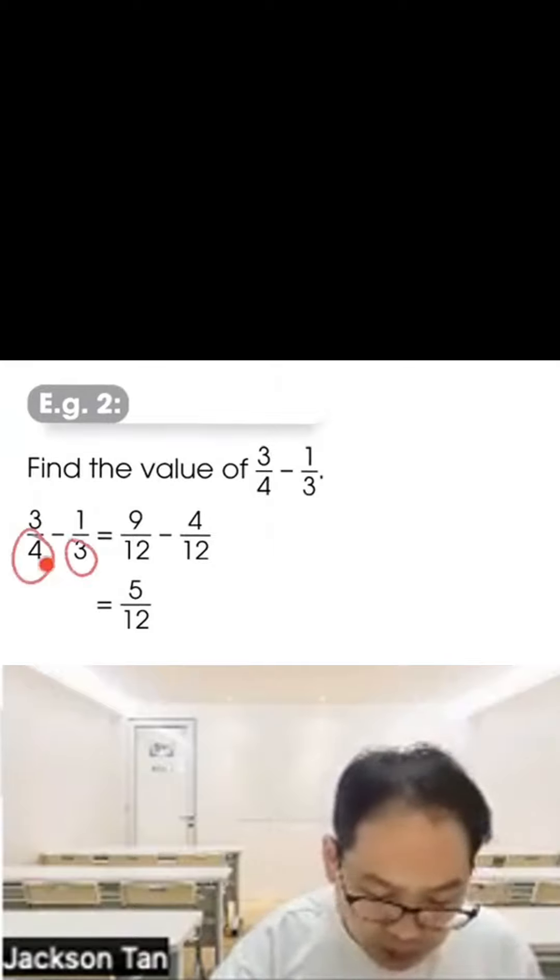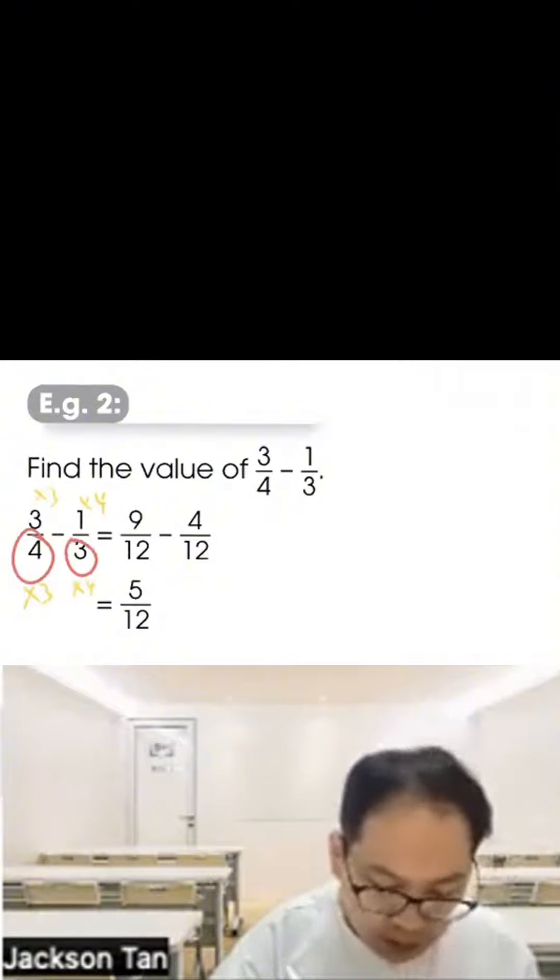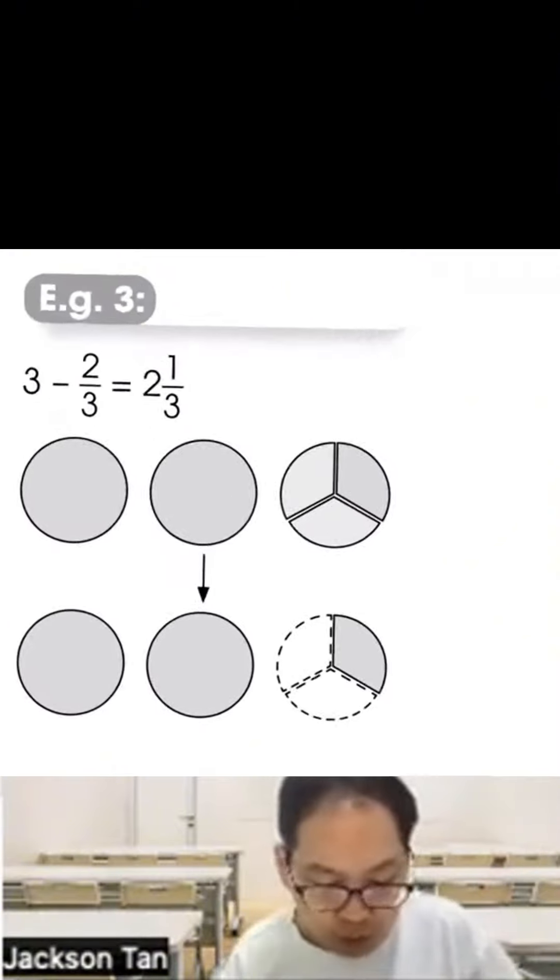Number 2: Find the value of three quarters minus one third. Make the denominators the same. Five and three. Here times three, so here times three. Here times four, so here times four. Get nine twelfths minus four twelfths. Nine minus four is five, so it's five twelfths.